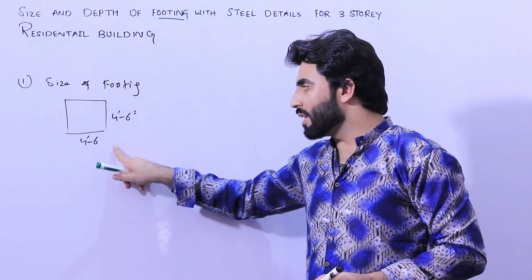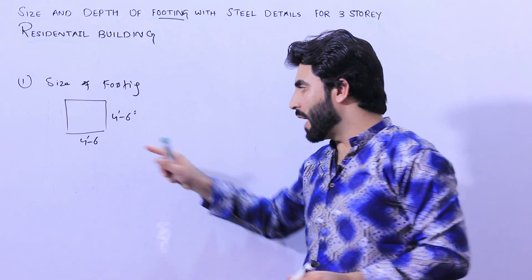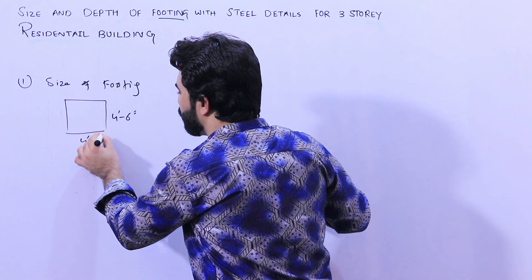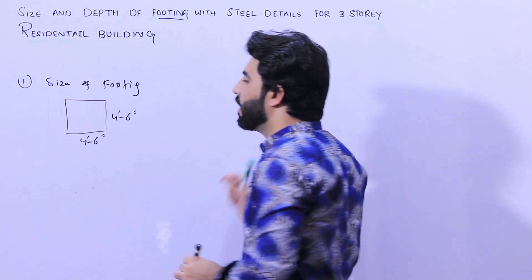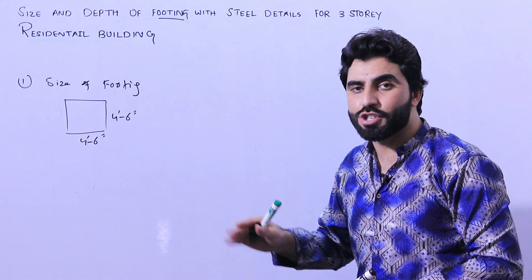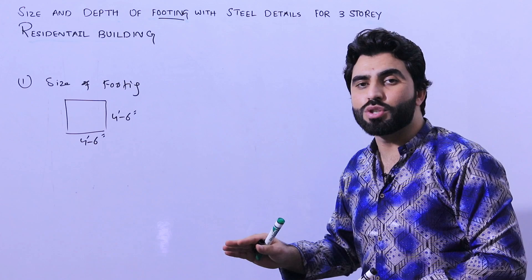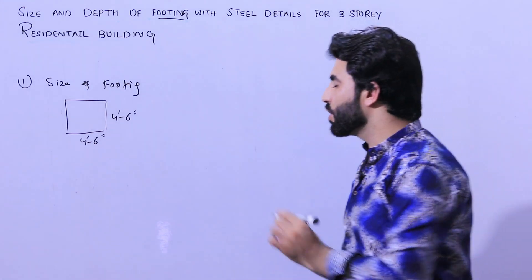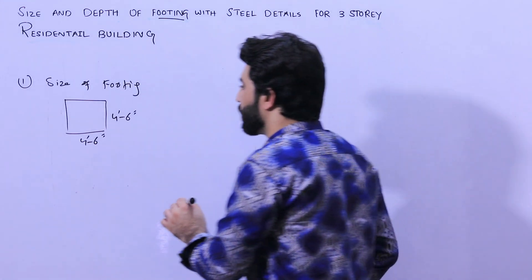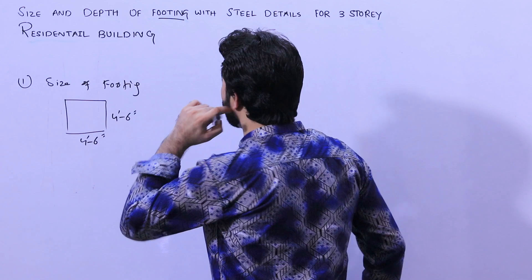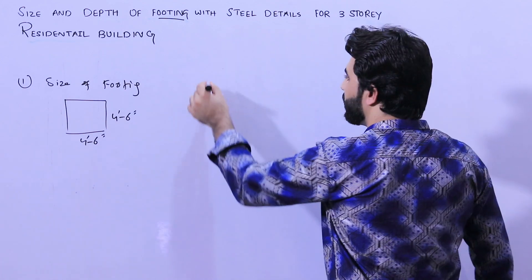It should not be less than this, but I am recommending it should be four feet six inches by four feet six inches for a three-story residential building. So this is the size of footing.